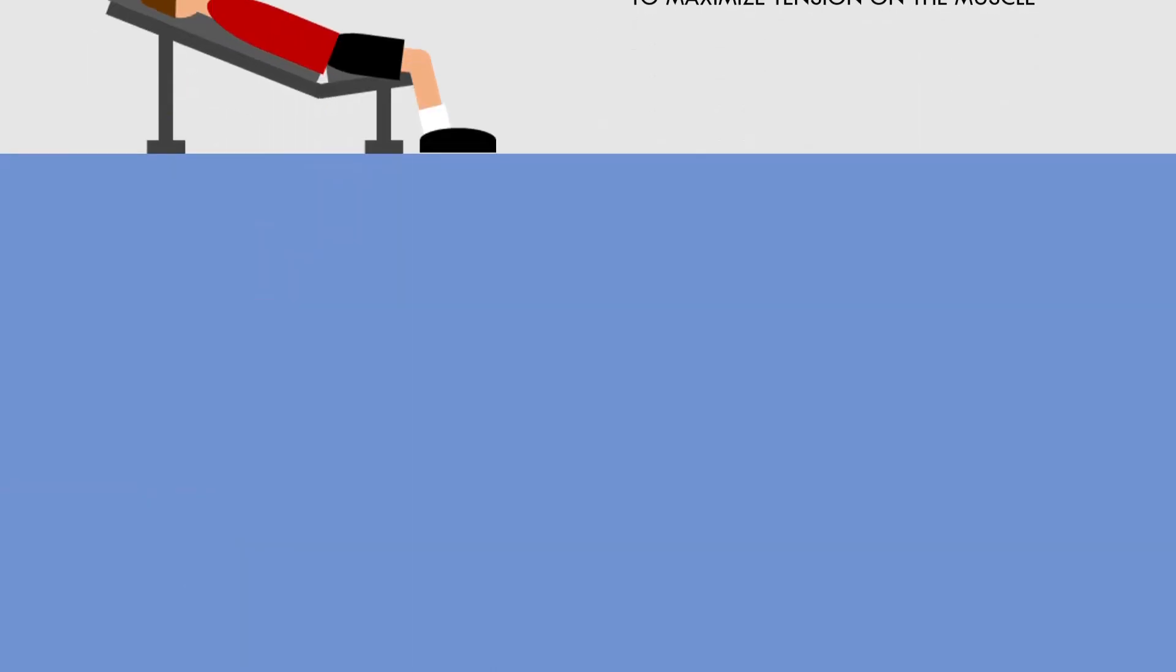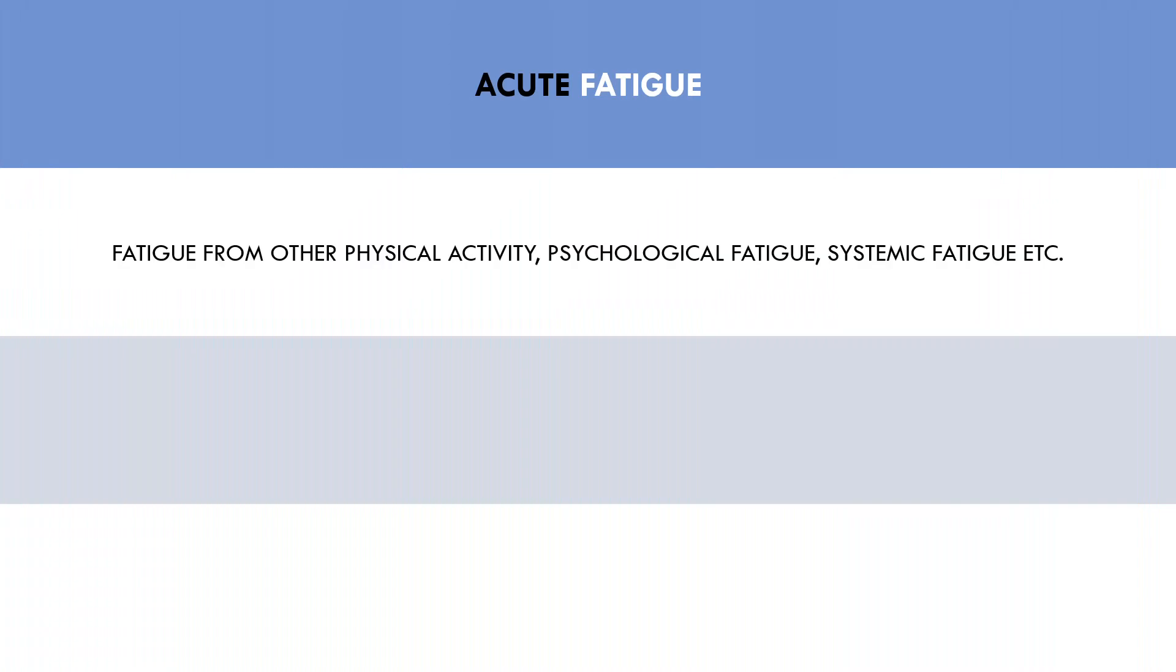Another factor which can influence lifting performance from week to week is acute fatigue levels. This could be due to a number of different reasons such as fatigue from exercise or work outside of resistance training, psychological fatigue from relationships or work, or systemic fatigue from hard training for an extended period of time. Acute fatigue can inhibit performance slightly due to a lack of motivation or physiological fatigue, but can quite easily increase once again through a period of reduced training load like a deload.